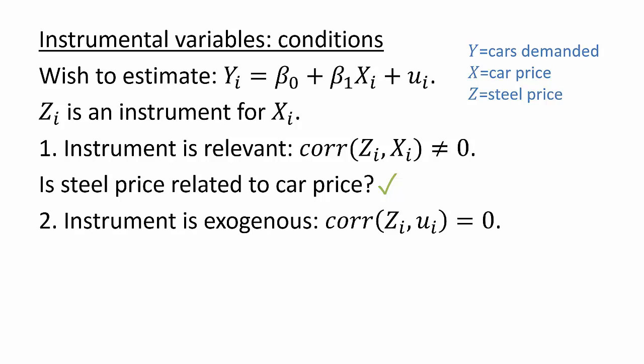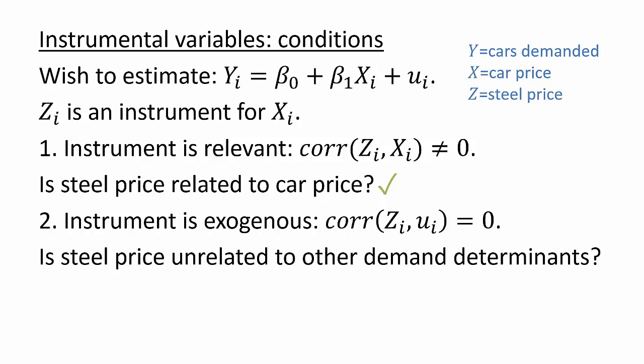The second condition is that the instrument is exogenous, meaning it is uncorrelated with the error term. We should be asking whether the instrument steel price is unrelated to other demand determinants, that is, everything that might affect demand for cars aside from price. It's hard to think of a reason why steel price would have a direct effect on demand for cars, so this seems reasonable. For now, we'll ignore more nuanced concerns, like whether high steel prices are correlated with high energy prices, which in turn could affect demand for cars. Putting that concern aside, the fact that we've satisfied both of the conditions means that steel price is a valid instrument.